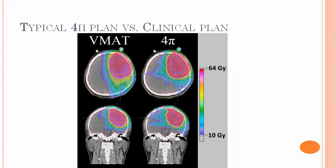Here's the dose wash between a typical VMAT plan and the 4Pi plan. And as you can see here, at about above 30 grays or more, the dose is much more conformal in the 4Pi plan.